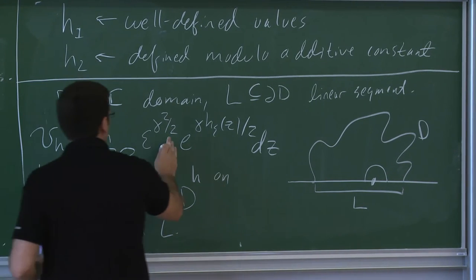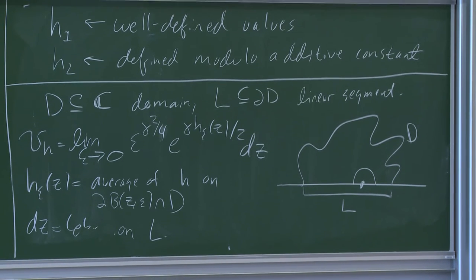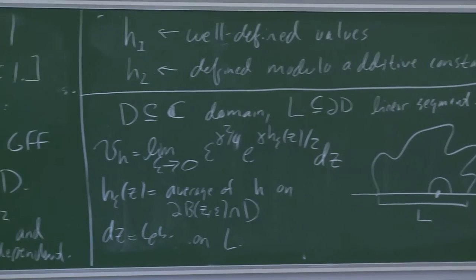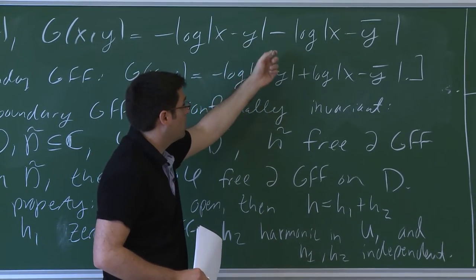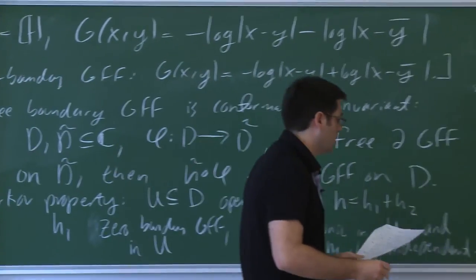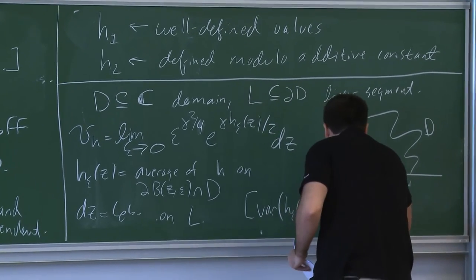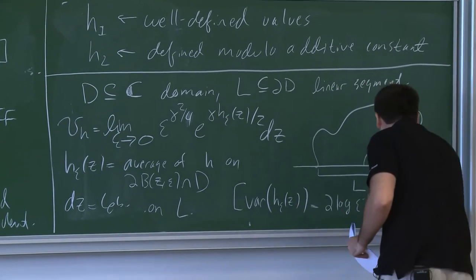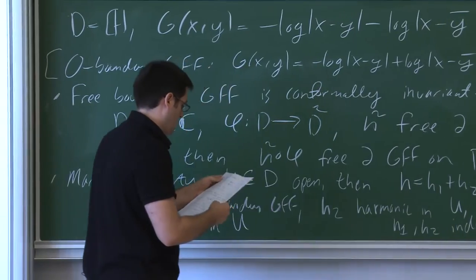The reason you see epsilon^{gamma^2/4} for the normalization — with an extra factor of 1/2 compared to the interior measure — is that for the free boundary GFF near the boundary, the variance behaves differently: the variance of the semicircle average H_epsilon(z) is equal to 2 times log(1/epsilon) plus something bounded, rather than log(1/epsilon).